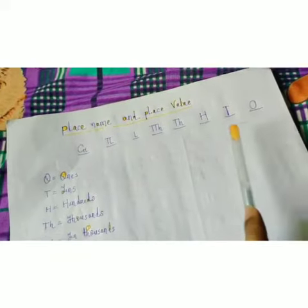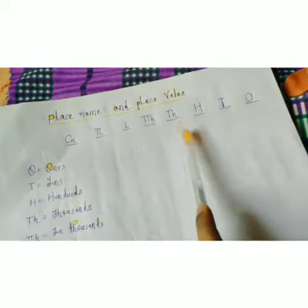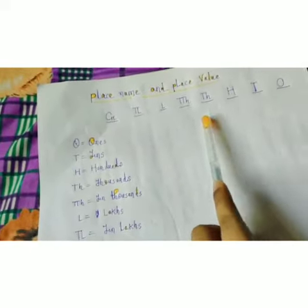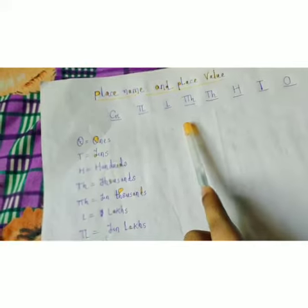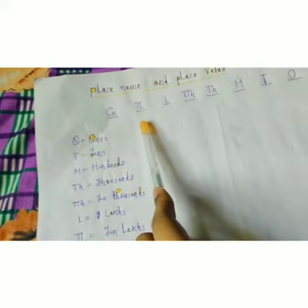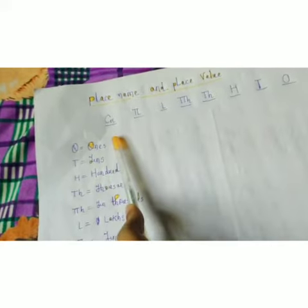First is ones, tens, hundreds, thousands, ten thousands, lakhs, ten lakhs, crore.